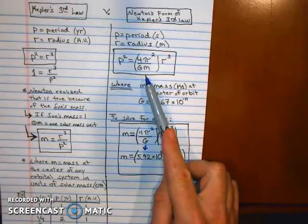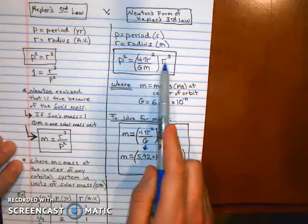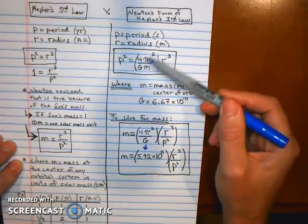Now, I didn't derive it for you here. I can share that derivation at a future time, but you can see the similarities. You're still equating the period of orbit to the radius of orbit. You still have period squared equals r cubed. The difference is you have this constant of proportionality.